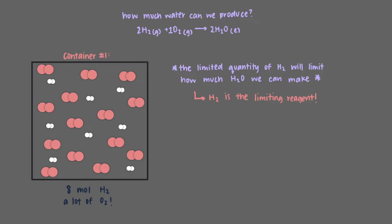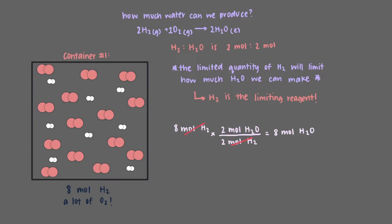Let's see how much water we could make if all of the hydrogen in this container were consumed. We have 8 moles of hydrogen, and we need 2 moles of hydrogen used for every 2 moles of water produced — a ratio we know from the balanced equation. Using this ratio as a conversion factor, we calculate that if 8 moles of hydrogen react with an excess of oxygen, we produce 8 moles of water.